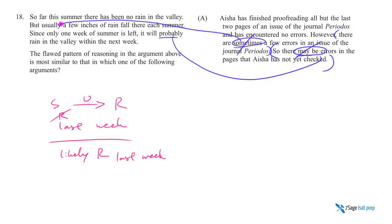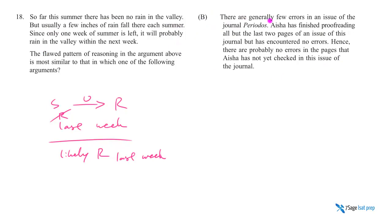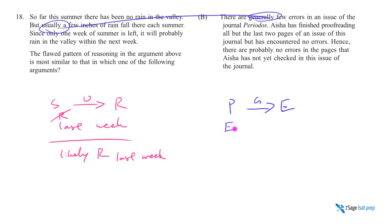Answer B says there are generally few errors in an issue of journal P — 'generally' matches 'usually,' so that's good. She's finished proofreading all but the last two pages and encountered no errors so far, with only two pages left. For B to be right, it would need to conclude that there are likely errors in the last two pages. But instead B concludes there are probably no errors in the pages not yet checked — that's the opposite direction, so B is wrong.